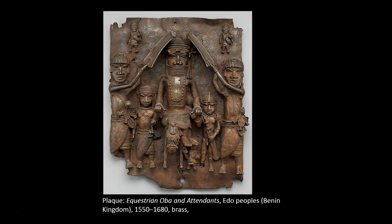The figures around him range in size, not because of their actual height or distance from the oba, but rather due to their level of importance within the court. This use of hierarchic scale — this convention of sizing human figures based on status — is found in artwork from cultures around the world and across time, including Egypt and ancient Near Eastern art.